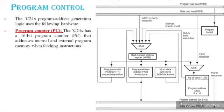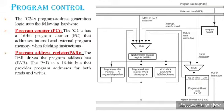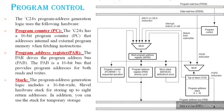The C24x has a 16-bit program counter (PC) that addresses internal and external program memory when fetching instructions. The program address register (PAR) drives the program address bus (PAB). The PAB is a 16-bit bus that provides program addresses for both reads and writes.